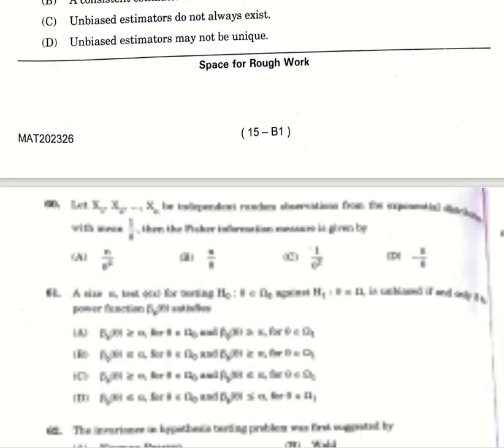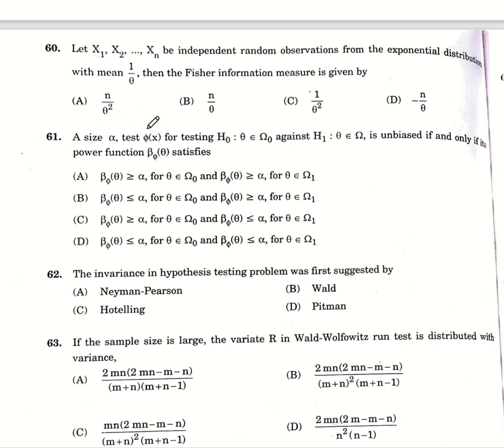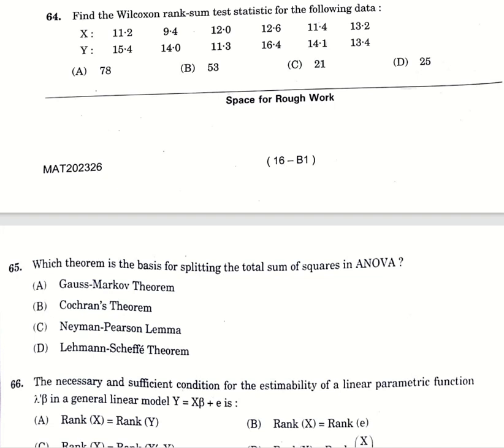Next question, which of among the following is true? Option number D, X and Y are neither independent nor correlated. Next, which of the following is not true? Option A, a consistent estimator is unique. Sixty, let X1 to Xn be independent random observations from exponential distribution with mean 1 by theta. Fisher information measure is given by A, n by theta square. Sixty-first question, the correct answer is option number B. Sixty-two, invariance in hypothesis testing was first suggested by Neyman-Pearson, option A. Sixty-three, if the sample size is large, the variance R in Wald-Wolfowitz run test is distributed with variance, option number B. Sixty-four, find the Wilcoxon rank sum statistic for the following data, option number C, 21. Which theorem is basis for splitting total sum of squares in ANOVA method? C, Neyman-Pearson lemma.